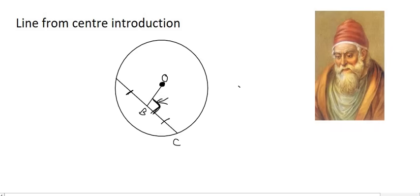So we can say that angle OBC, for example, will equal 90 degrees. And his reason was that we have a line from the center.